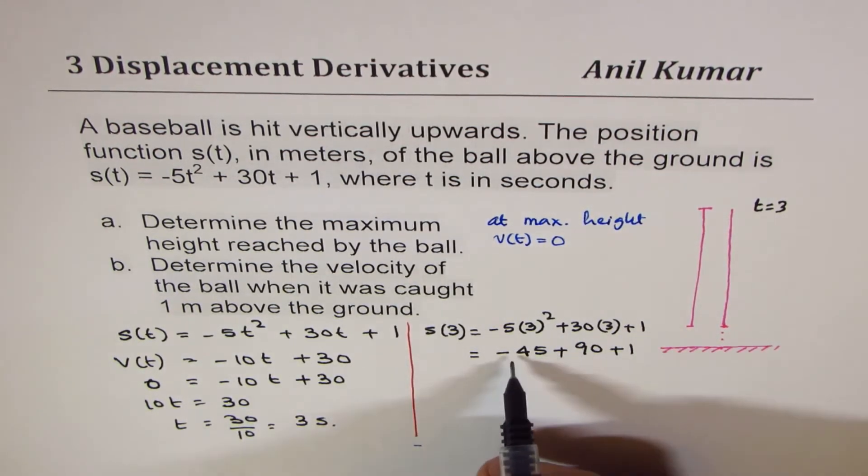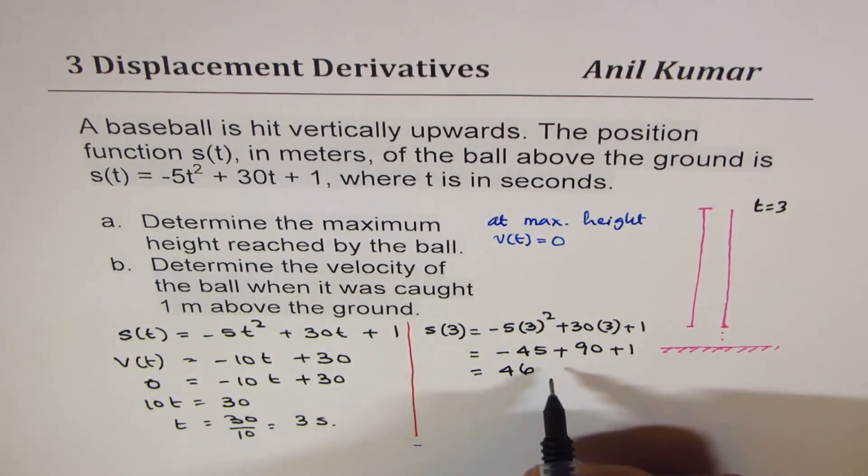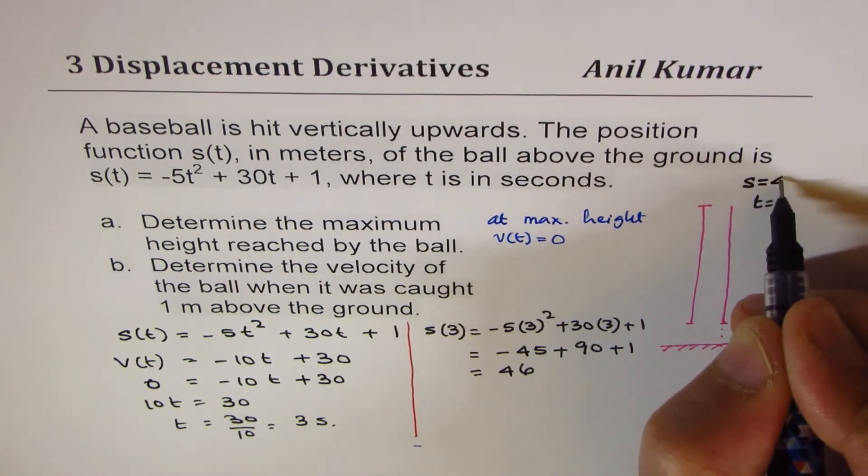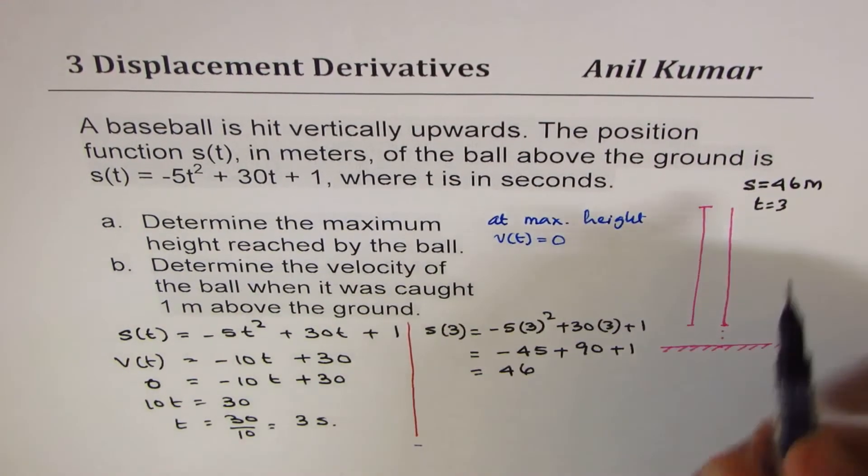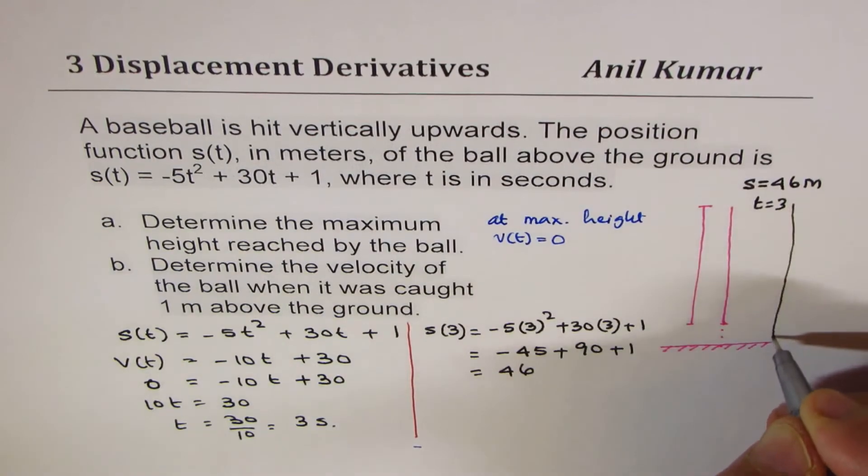So that is 45 plus 45 plus 1, which equals 46, and the units are meters. So at this point, the position here is 46 meters above the ground. This height is measured from the ground.